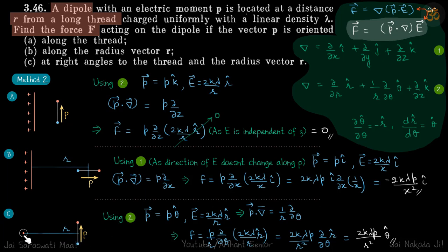So in this case the wire is going inside the plane and p is aligned like this. So it's perpendicular to the radial vector as well as the wire itself. So p now we can write as p theta cap. So this theta cap is along this line and along r cap we have our electric field 2k lambda by r r cap.